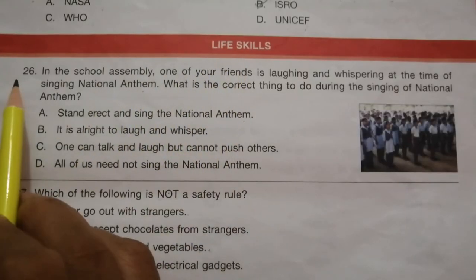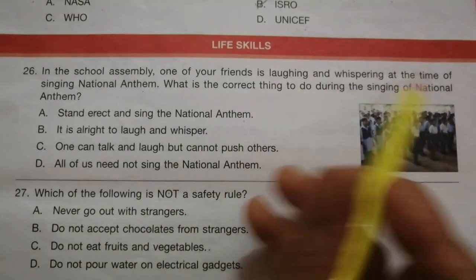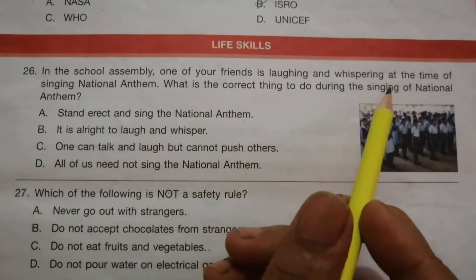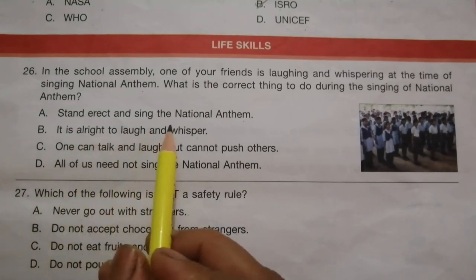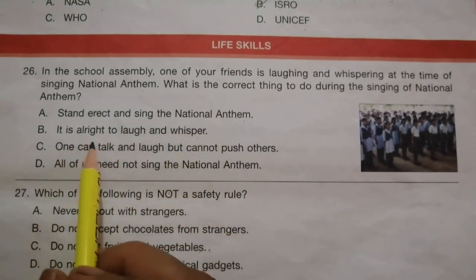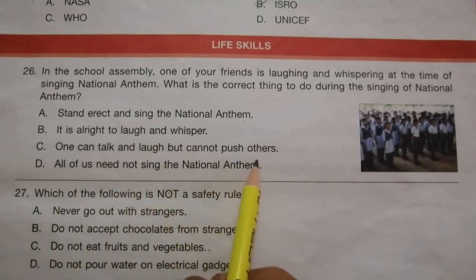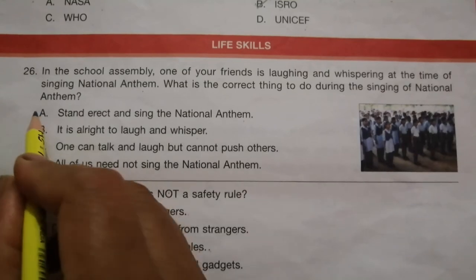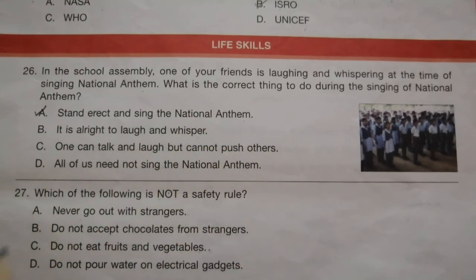Life Skills. Question 26: In the school assembly, one of your friends is laughing and whispering at the time of singing the National Anthem. What is the correct thing to do? The options are: Stand erect and sing the National Anthem; It is alright to laugh and whisper; One can talk and laugh but cannot push others; All of us need not sing the National Anthem. The correct answer is A, stand erect and sing the National Anthem.